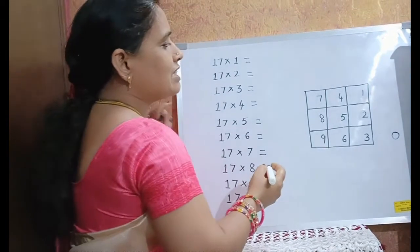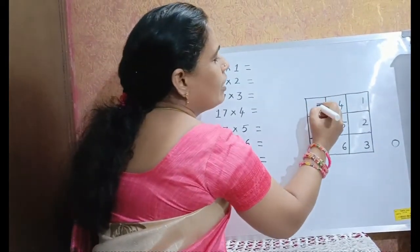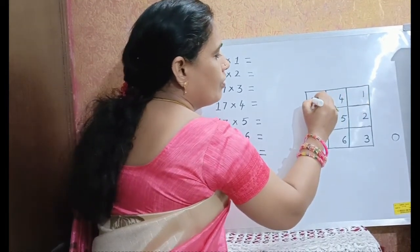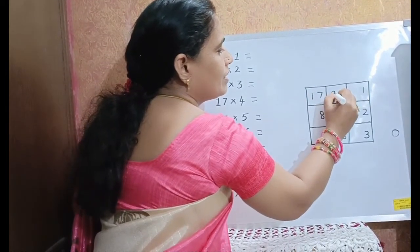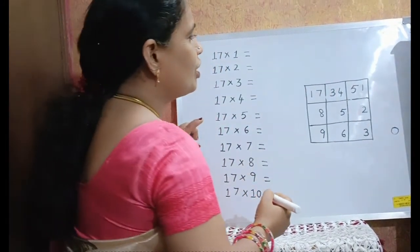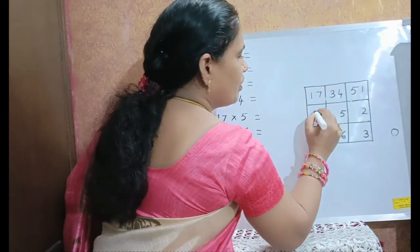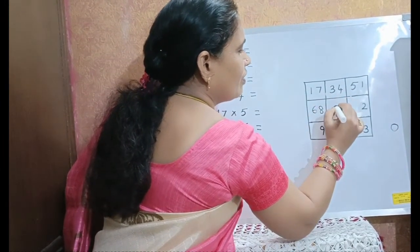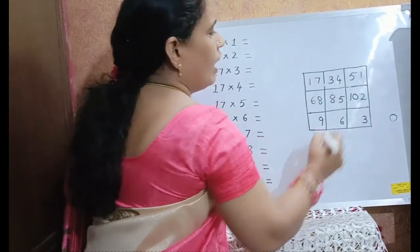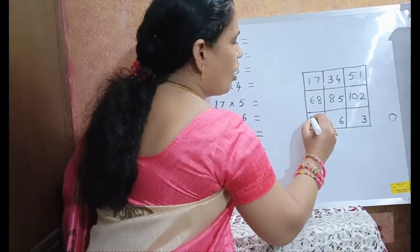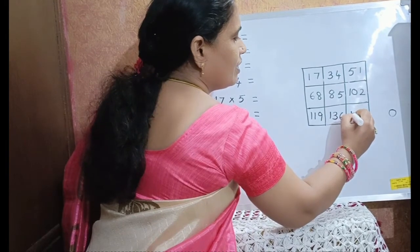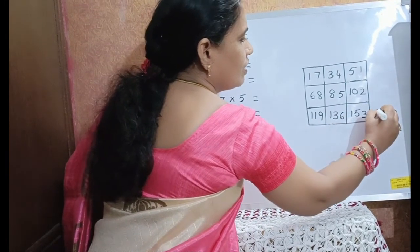For the tens digit, we have to write first 3 consecutive odd numbers: 1, 3, 5, and then 3 consecutive even numbers: 6, 8, 10, and again consecutive odd numbers: 11, 13, 15, 17.